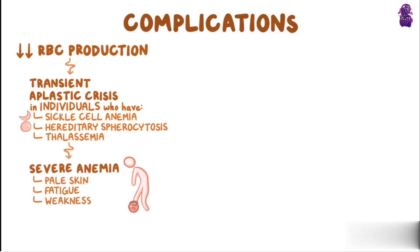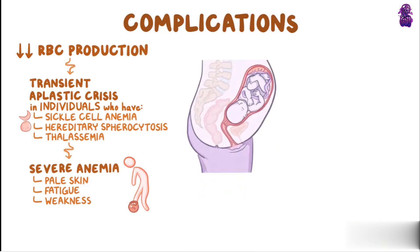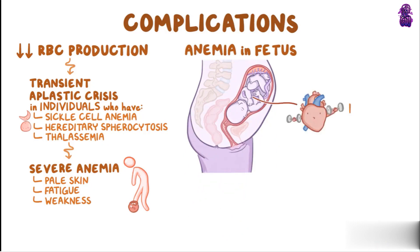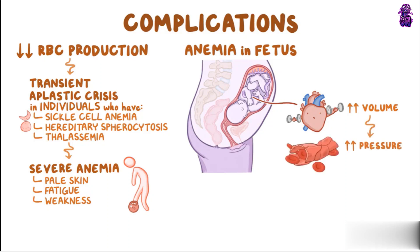Parvovirus B19 in a pregnant female can cause anemia in her fetus. Because there are fewer red blood cells to carry oxygen, the heart will pump a larger volume of blood to give the growing fetus all the oxygen it needs. This raises the pressure inside blood vessels and fluid can start to leak out of the capillaries as a result.